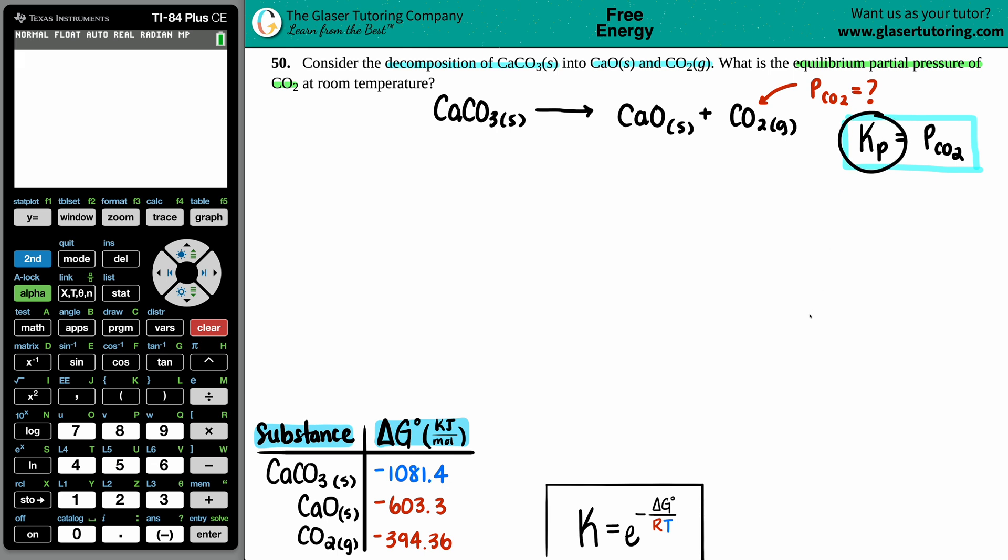Now let's link another formula. We're going to talk about free energy because there's a formula that will link equilibrium constant. There is a formula that links equilibrium constant with Gibbs free energies, the appendix values at the back of the book.